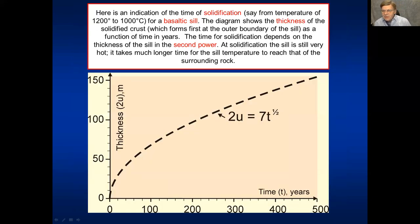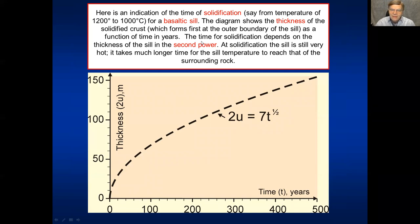Once a sill is in place it starts to solidify and cool down. For a basaltic sill the temperature may go from 1200 degrees to 1000 degrees, and as it solidifies the crust at the margin of the sill gradually becomes thicker — indicated here on the vertical axis as a function of time in years on the horizontal axis. The time of solidification for any sheet injection like a sill or inclined sheet is a function of the thickness of the sheet squared. Once solidified it is still very hot — perhaps 1000 degrees — but solid, though far from the temperature of the surrounding rock, which takes a very long time.